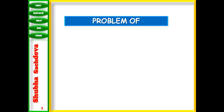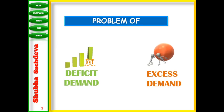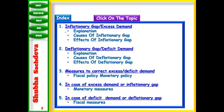Good morning everyone. As you know, we are studying the chapter on problems of deficient demand and excess demand. In one previous video I explained the inflationary gap, deflationary gap, and measures to correct excess demand and deficient demand. We also covered monetary policy and quantitative measures. Today we are going to continue with the qualitative measures to correct excess demand or deficient demand under the monetary policy taken by the RBI.